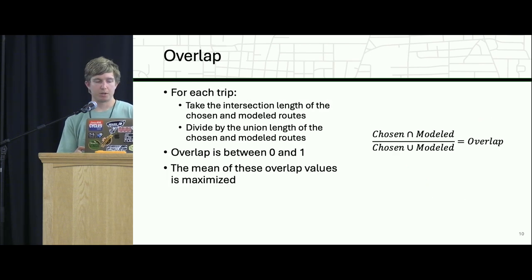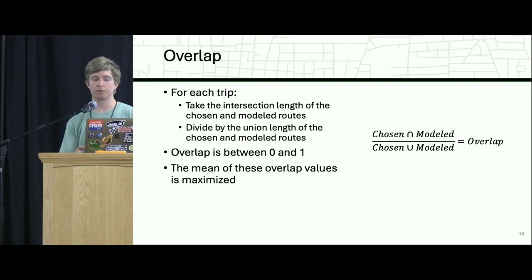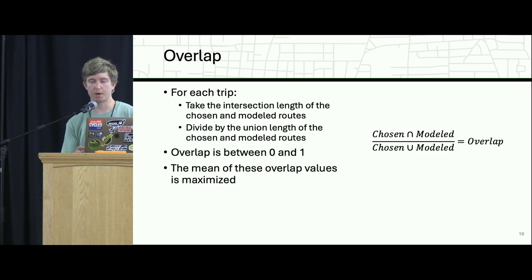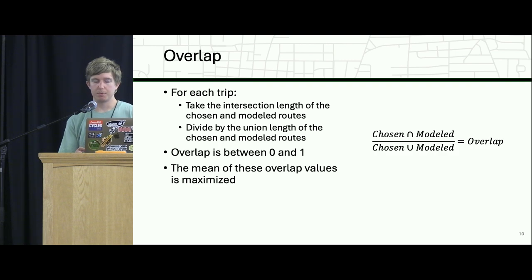To briefly explain the overlap variable: if you have a route that you modeled and the route that was actually taken, it's the intersection between the two. You count the shared length among them and divide it by the union — that is, the shared length plus the portions specific to either the chosen or the modeled route. This gives you a value between zero and one, and you want to maximize the mean.